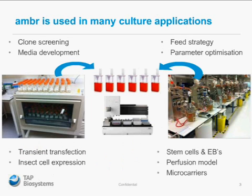So where is AMBA used? AMBA is used in many cell culture applications, but mainly in cell line development. The cell lines would be created and then some early, very high-throughput screening, maybe a FACS method or something like that. And finally coming on to batch and particularly fed batch screening, which has traditionally been carried out in shake flasks and then moving on into benchtop reactors for process optimization.